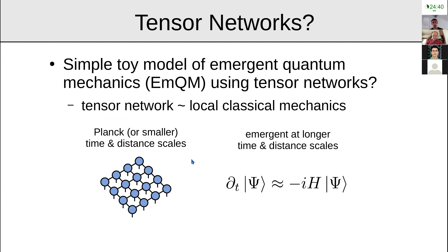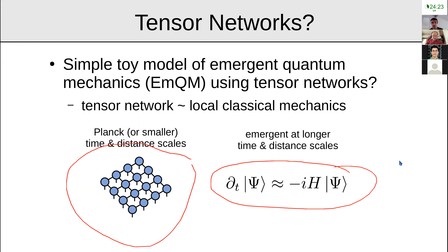We want the tensor network to be a local classical model, because our everyday reality looks like local classical mechanics. The idea is that at the Planckian time and distance scale there are tensors, but at the larger and slower scales we observe, Schrödinger's equation emerges. This is not proposing that the universe is built out of tensors — it's a toy model showing as a proof of principle that quantum mechanics can emerge from a local classical model.